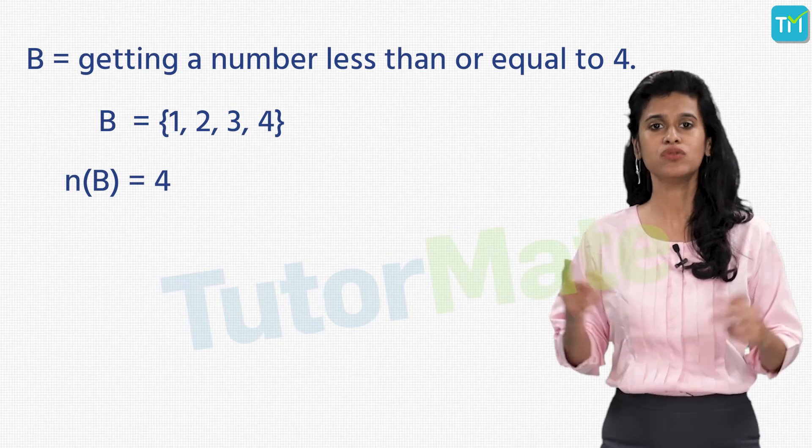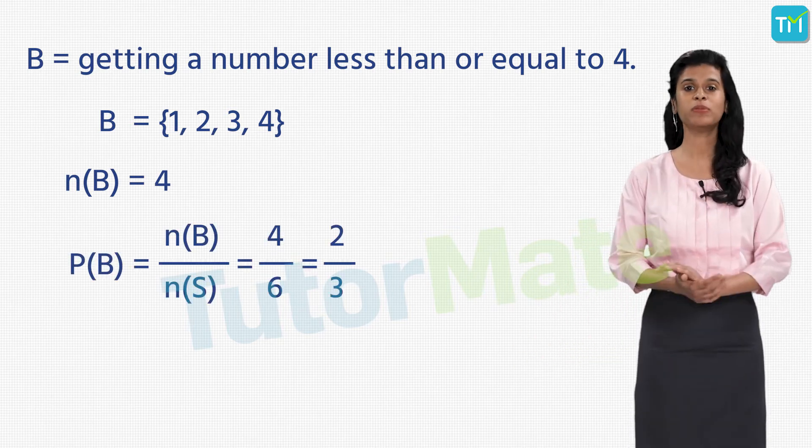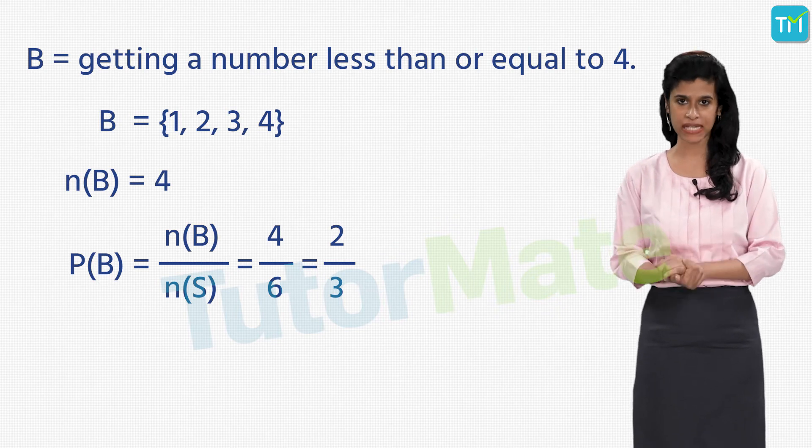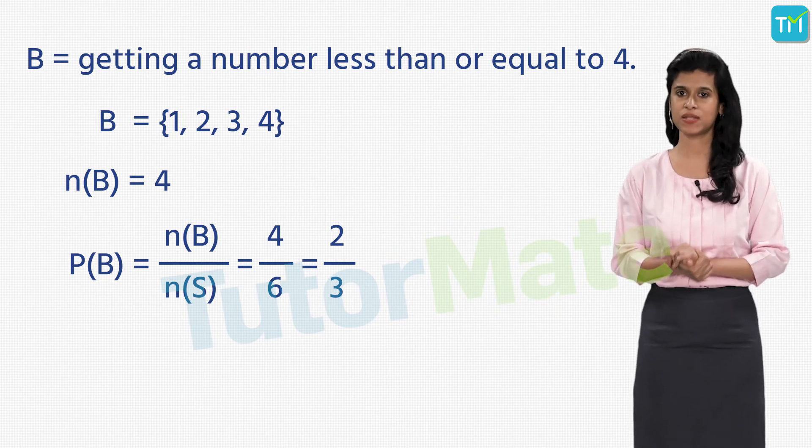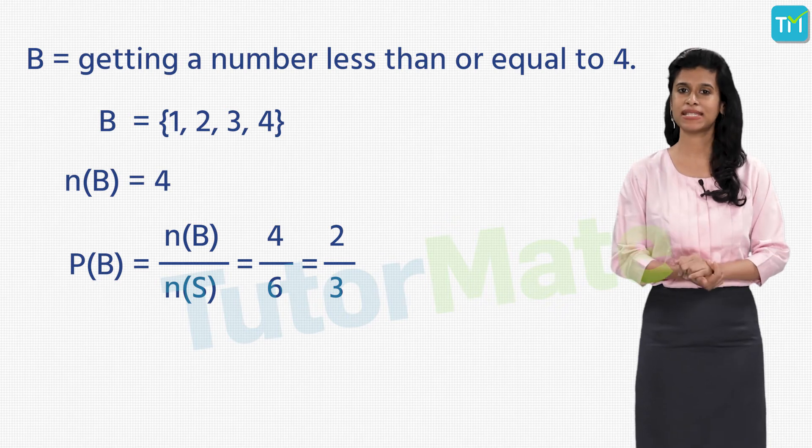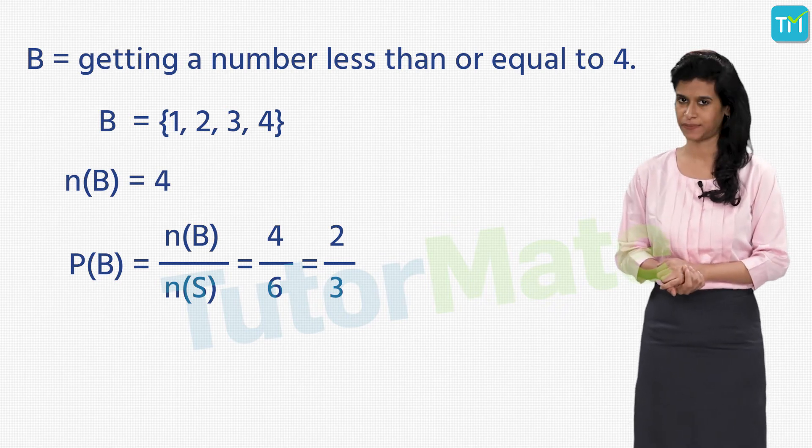Now B has 4 elements, so n(B) = 4. Therefore, probability of B or P(B) = n(B) / n(S) which is equal to 4/6, and that equals to 2/3.